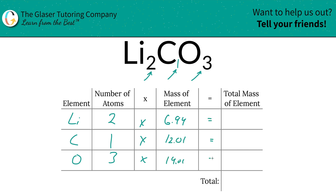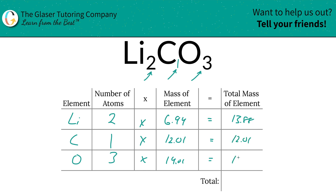Then we're going to multiply across each row to find the total mass of the element. So this is 13.88 for lithium, carbon is going to be 12.01, and oxygen here is going to be 48.